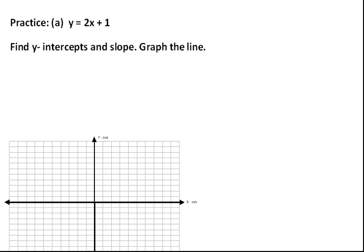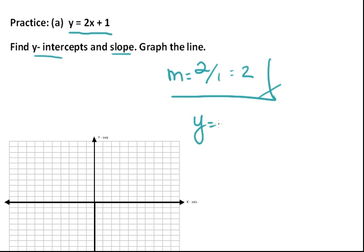Here in the first one, this is the slope-intercept form of the line equation. We're asked to find the y-intercept and the slope. That information is pretty much given to us. The slope is 2 over 1 or 2, so that's our slope. Our y-intercept is going to be 0 comma 1.